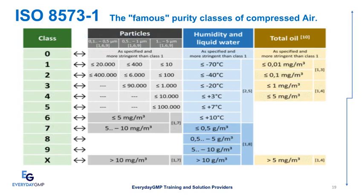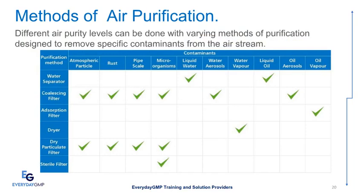ISO 8573-1 — the famous purity classes of compressed air. Here we see purity classes from 0 to 10 with reference to particles, humidity and liquid water, and total water content. Different air purity levels can be achieved with varying methods of purification designed to remove specific contaminants from the air stream. Some methods used include water separators, coalescing filters, dryers, dry particulate filters, and, where required, sterile filters.